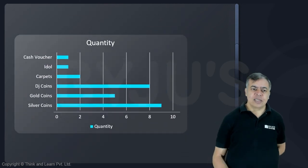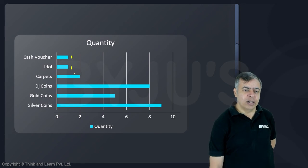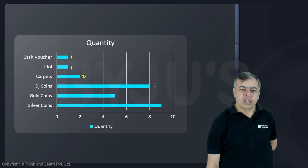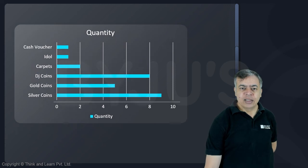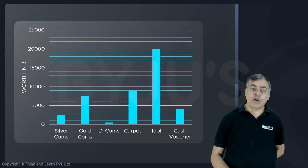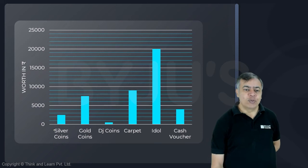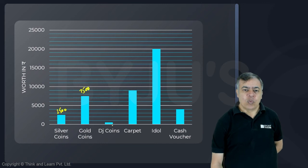These are the quantities he was having: cash voucher - 1, idol - 1, carpets - 2, DJ coins - 8, gold coins - 5, and silver coins - 9. These are the worth of each of them: one silver coin worth 2,500, one gold coin worth 7,500, one DJ coin worth 500.